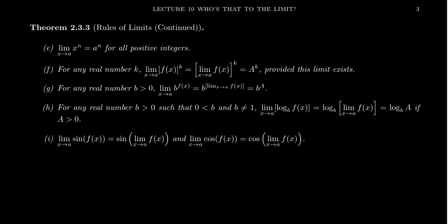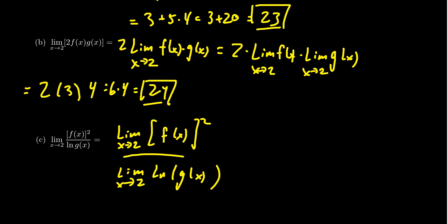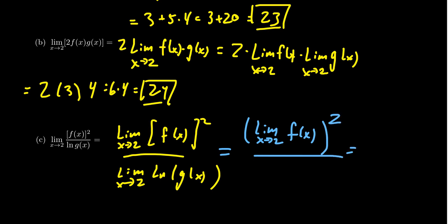For any real number k, if you take the limit as x approaches a of f(x) to the k, this equals the limit of f(x) raised to the k — that is, A to the k. So you can take the limit of the base, which is A, and then raise it to the power k. When you have a power expression where the exponent is fixed and the base is a variable function, you can just take the limit of the base. Applying this to our example: the limit of f(x)² as x approaches 2 is just the limit of f(x) quantity squared. Since the limit of f(x) is 3, this becomes 3² = 9.